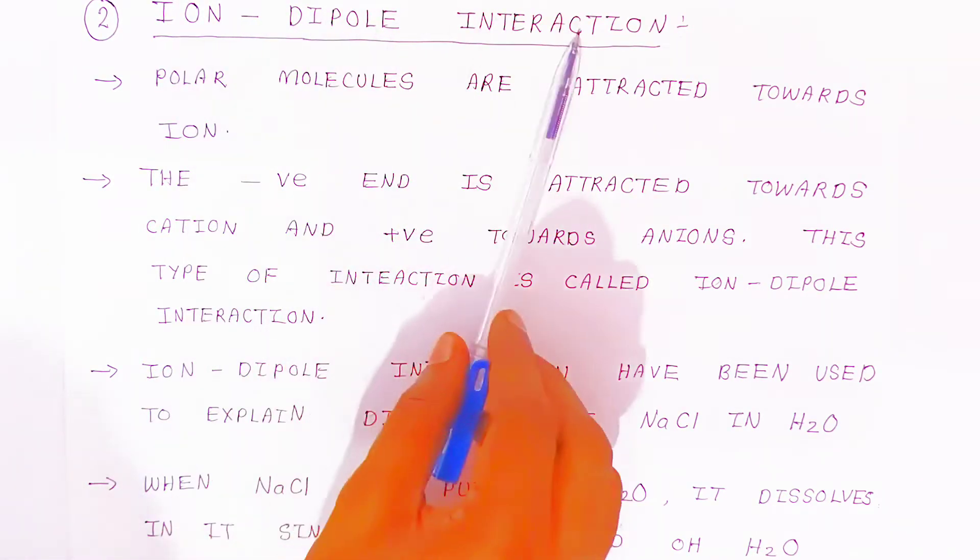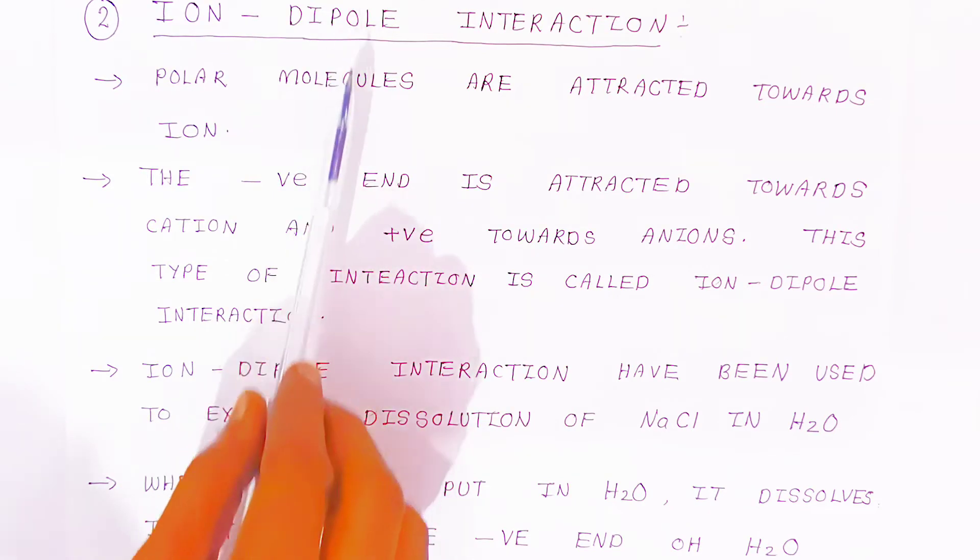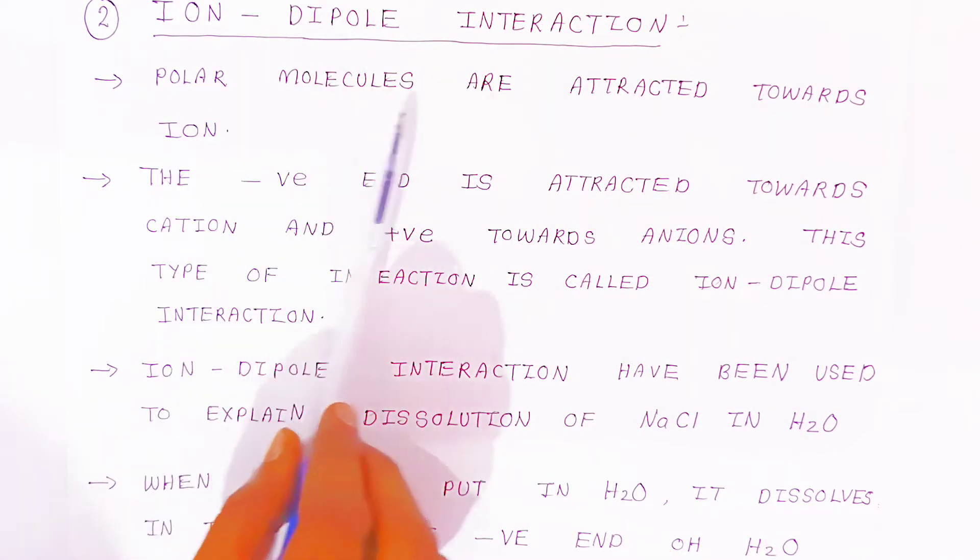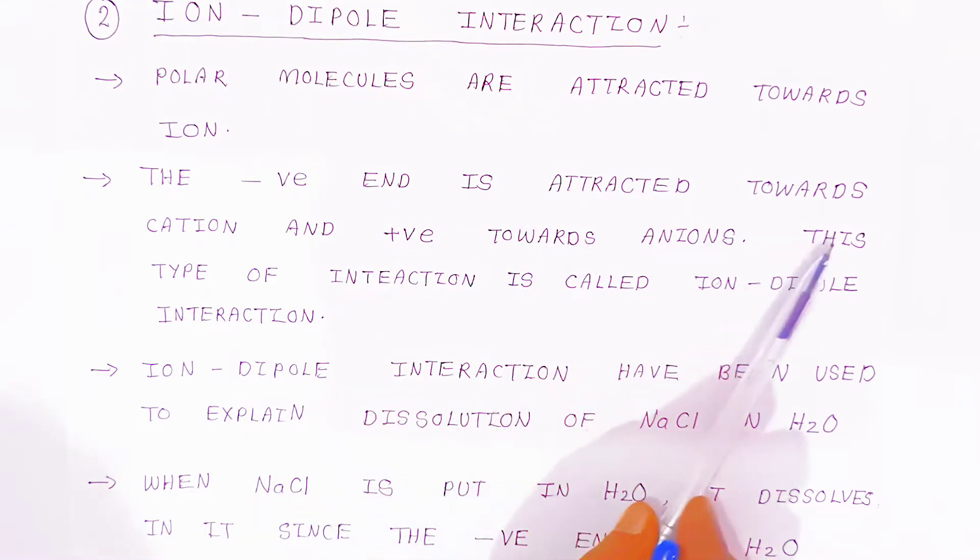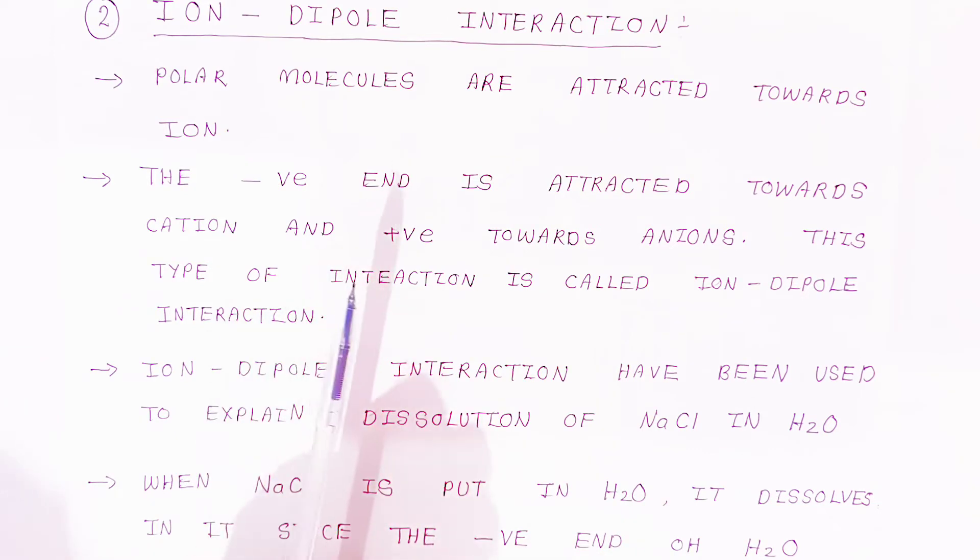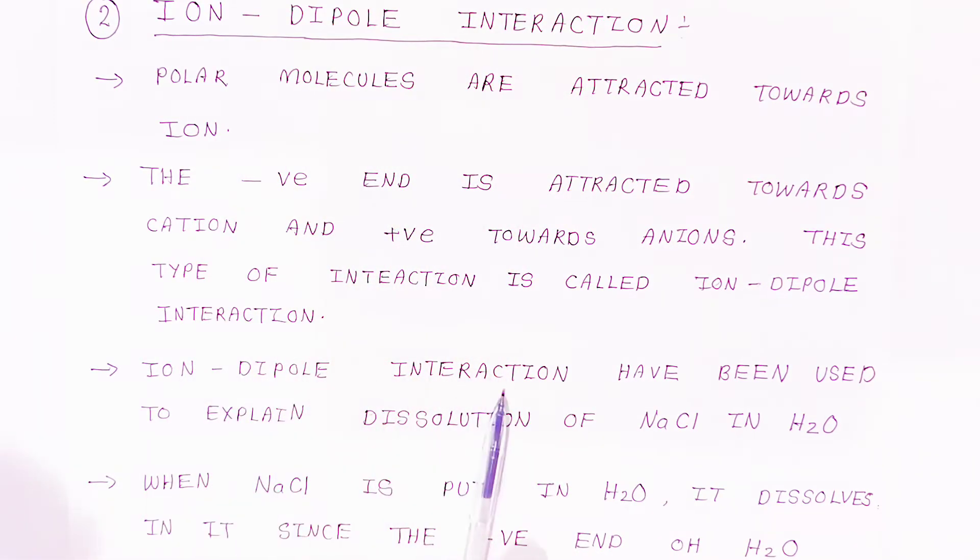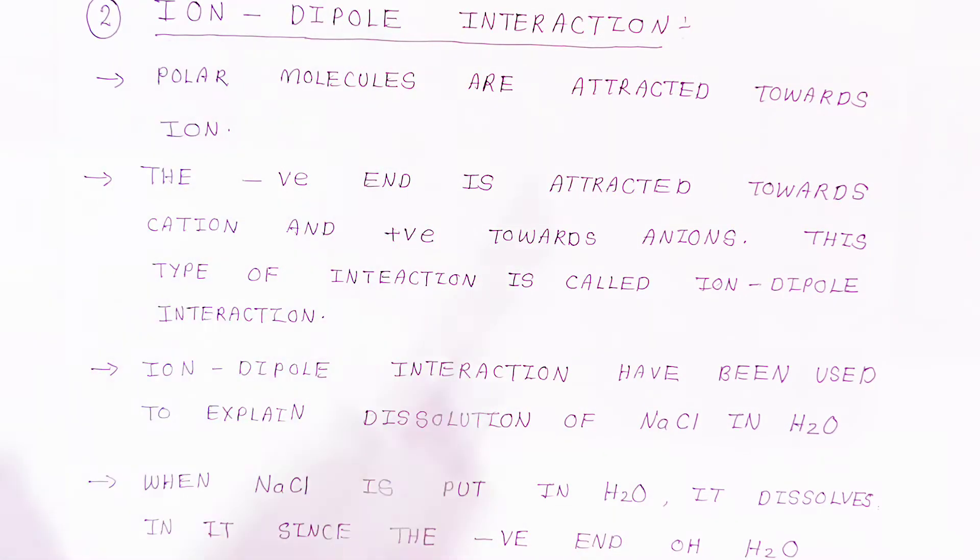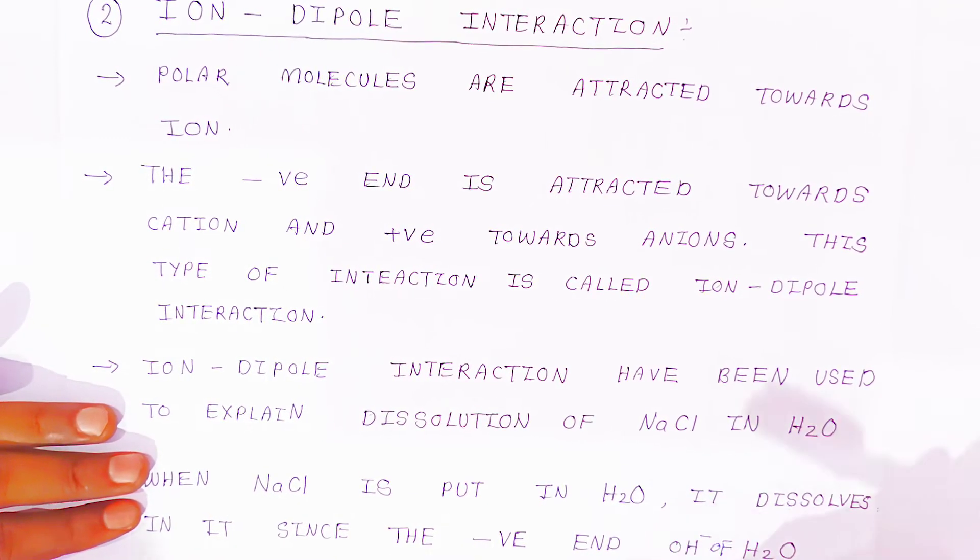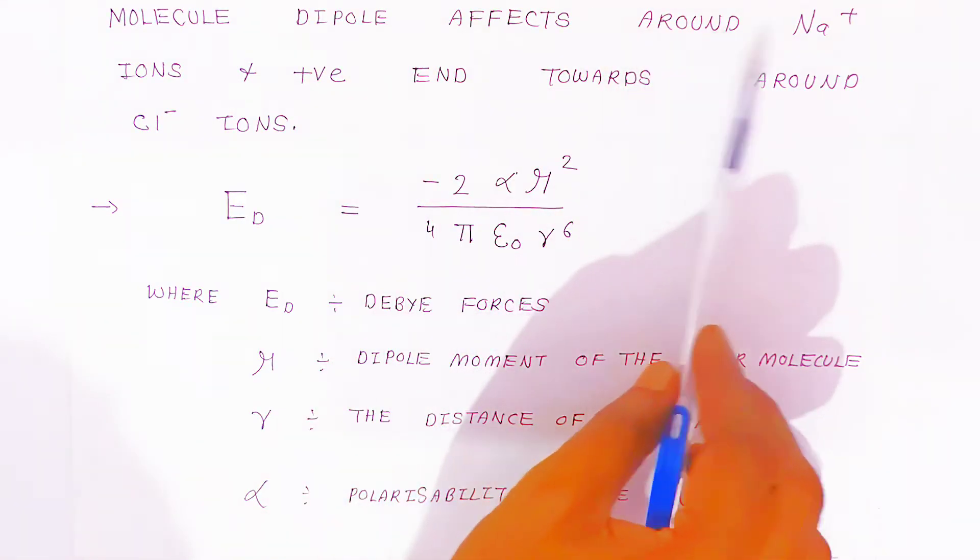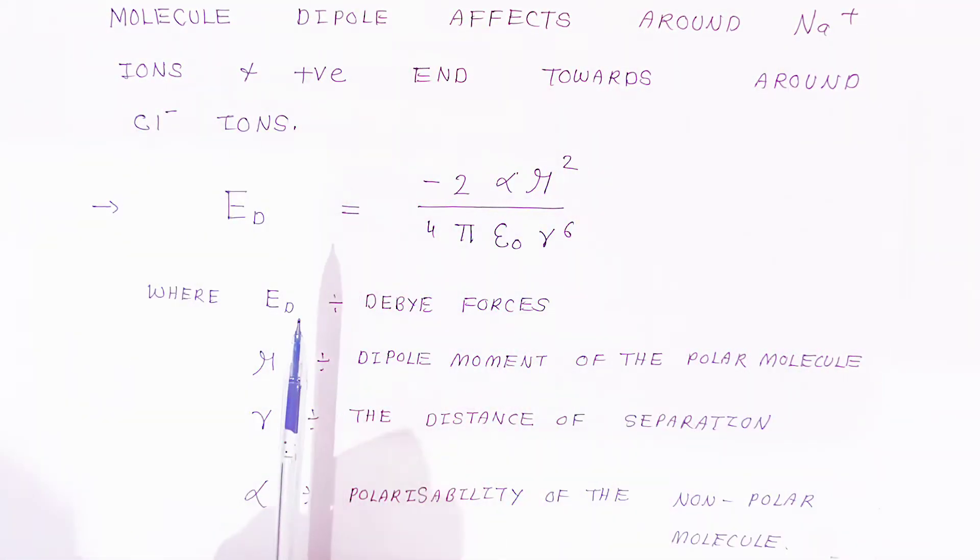One more type of Van der Waals force is called ion-dipole interactions. Polar molecules are attracted towards ions. The negative end is attracted towards cations and the positive towards anions. This type of interaction is called ion-dipole interaction. Ion-dipole interactions have been used to explain dissolution of NaCl in water. When NaCl is put in the water, the negative end of the water molecule dipole affects around the Na+ ions and positive end towards around the Cl- ions.